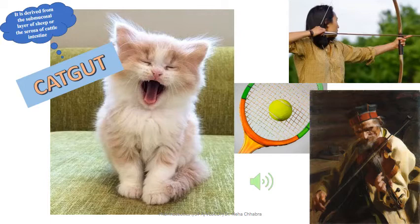Now let's start with catgut, or surgical gut. Its basic constituent is collagen, derived from the submucosal layer of the small intestine of healthy ruminants — cows, sheep, and goat. For those who thought catgut is made from the gut of cats, that is not true. It is made from cattle intestine most of the time. It is not the gut of a cat being used; it is that of any other ruminant like cow or goat.